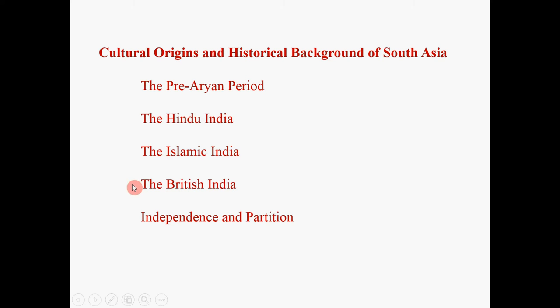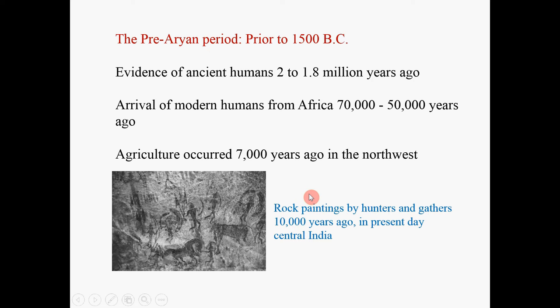The pre-Aryan period: prior to 1500 BC, there is evidence that South Asia was populated by ancient humans 2 million years ago. There is also evidence that modern humans arrived in South Asia from Africa 70,000 to 50,000 years ago. These are small bands of hunters and gatherers. Here is a picture of rock paintings done by those hunters and gatherers 10,000 years ago.